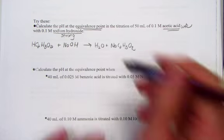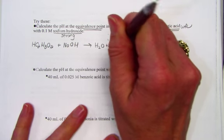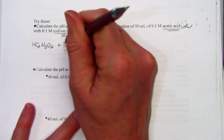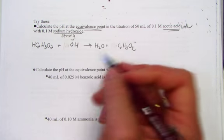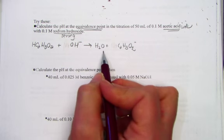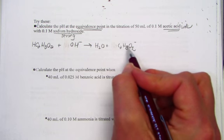If you eliminate the spectator, which we might as well, we end up seeing a conjugate pair form between the acetic acid and the acetate ion. So acetic acid, weak, strong base, produces water in the conjugate base called acetate.